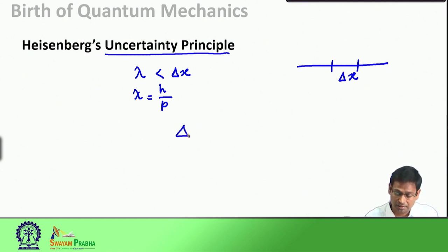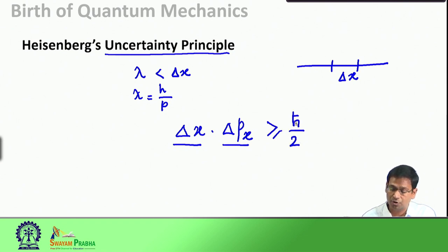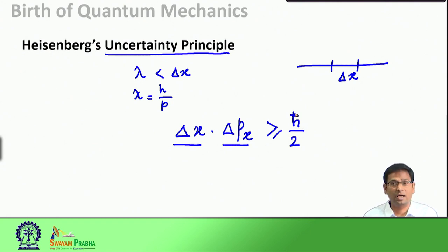Heisenberg proposed the relation that Δx · Δpₓ ≥ ℏ/2, where Δx is the uncertainty in the measurement of position, Δpₓ is the uncertainty in the measurement of momentum, and ℏ is simply h divided by 2π. This is Heisenberg's uncertainty principle: I can either measure the position or the momentum precisely, but not both.